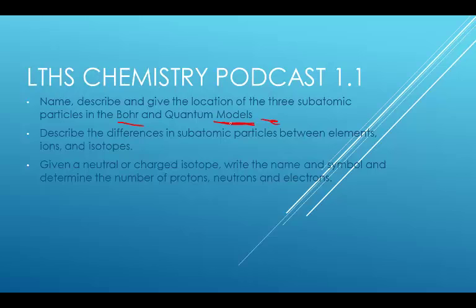And give a neutral charge or a charged isotope given one of those. Write the name and symbol and determine the number of protons, neutrons, and electrons. Let's hoppy hoppy to it.